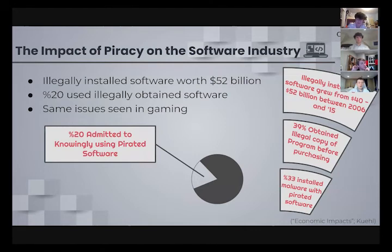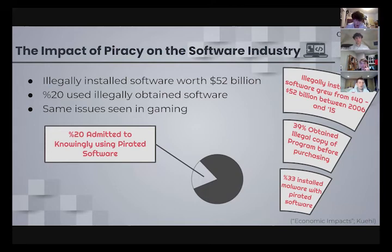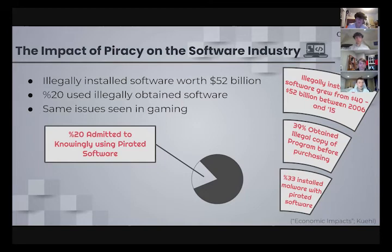Software has been adversely affected by piracy, losing about $29 billion per year. It is estimated that about 40% of all installed software is illegal. The value of illegally installed software grew from $40 billion to $52 billion between 2006 and 2015. 20% of UK internet users over 12 admitted to knowingly using pirated software, 12% within the last three months. 39% of these users obtained an illegal version before purchase, and for 22% it was the case for all purchased software. The try-before-you-buy model is very prevalent in this industry. The chance of installing malware on pirated software is 33%, costing consumers an estimated $1.5 billion per year.